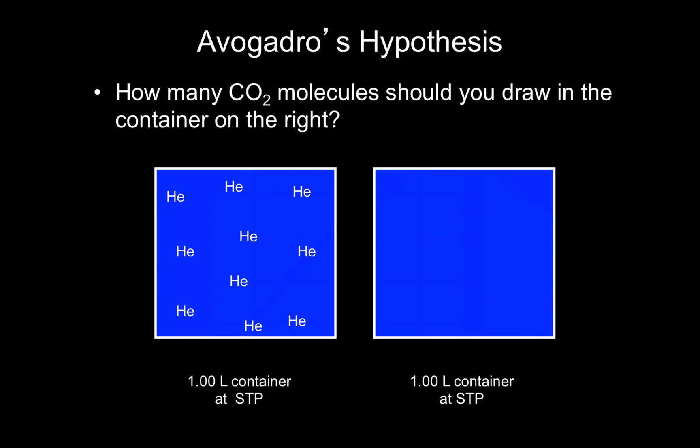Let's look at this example. Both of these containers are 1 liter at STP. How many carbon dioxide molecules should you draw in the container on the right? Count how many helium atoms there are — there are 10 helium atoms on the left. That means you should draw 10 carbon dioxide molecules on the right. If the volume is the same, the temperature is the same, and the pressure is the same, then both containers contain the same number of gas particles. This is Avogadro's Hypothesis.